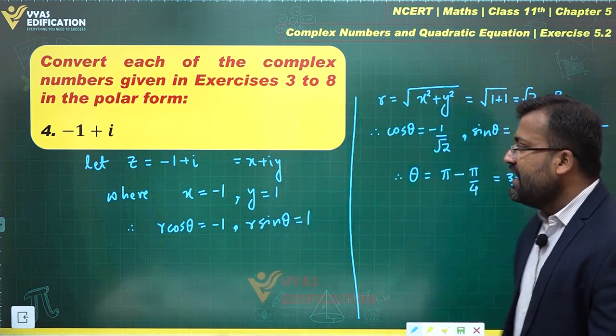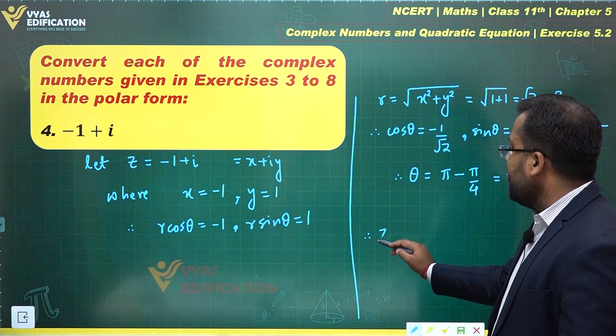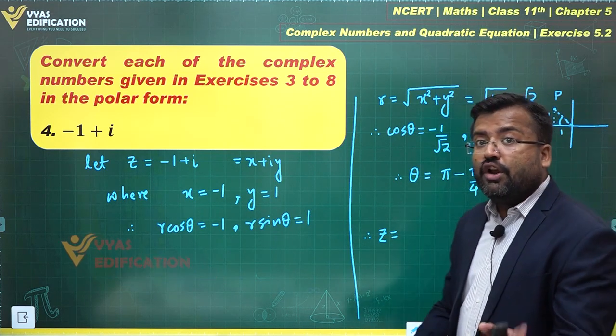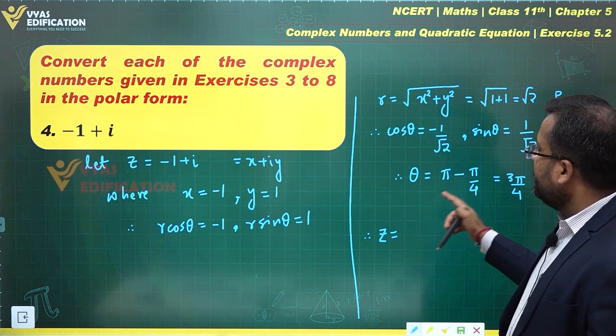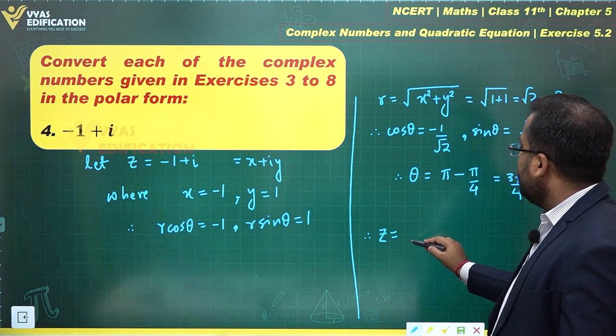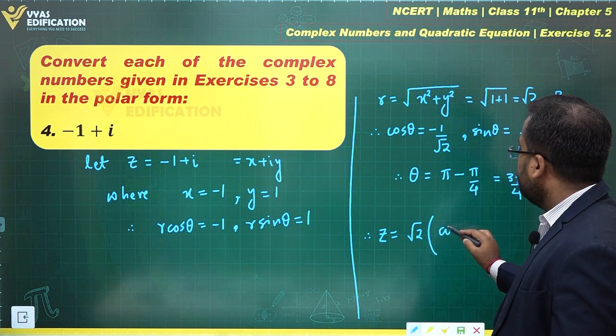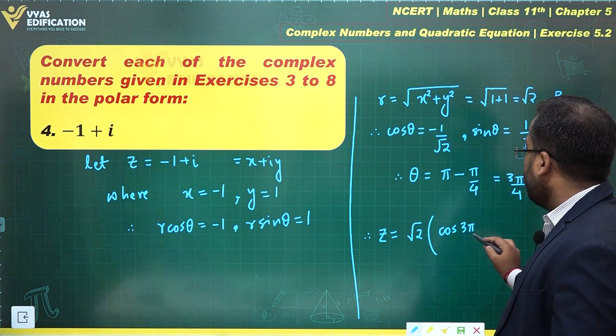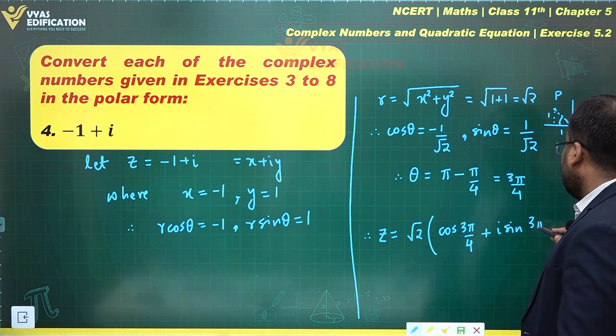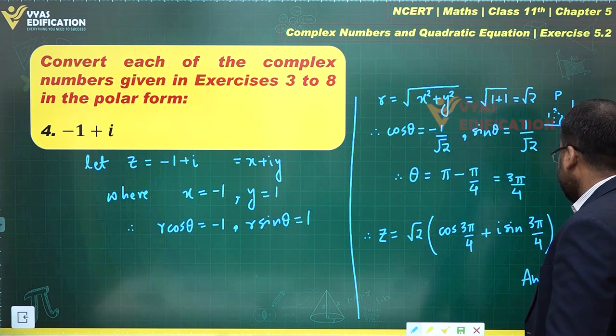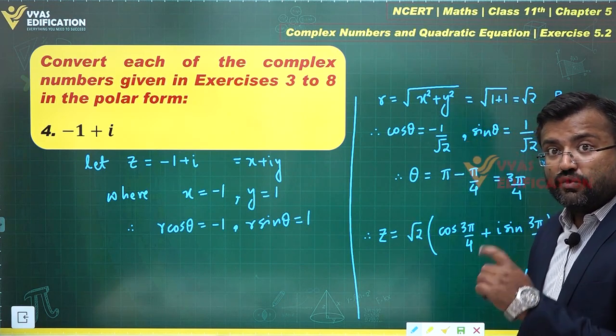And therefore z in the polar form, the complex number z in the polar form, would be equal to r times cos theta plus i sine theta. r is root 2, cos theta, theta is 3 pi by 4, plus i sine 3 pi by 4. And yes, that is my answer for this question.